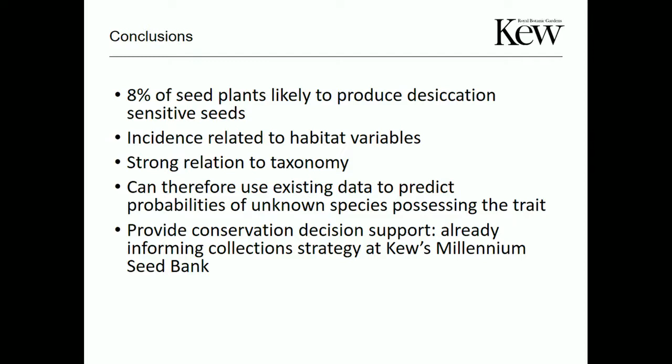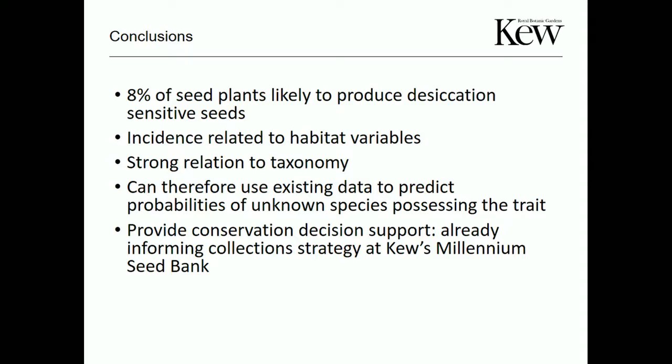For example, if someone gives me a species list for Thailand and asks where to start and which to prioritize — which are most likely to be storable — we can send them away with a good idea of where to focus. This also has applications for habitat restoration in tropical environments and identifying species vulnerable to increasing drought under climate change.